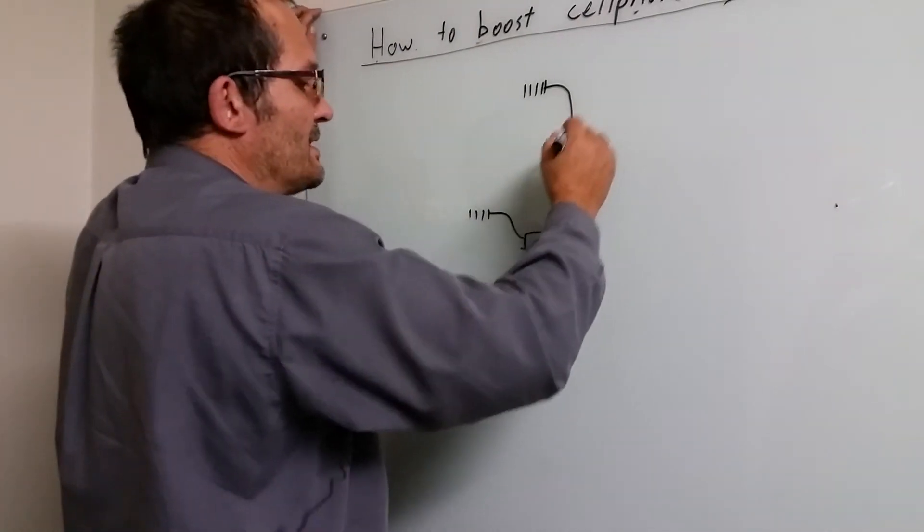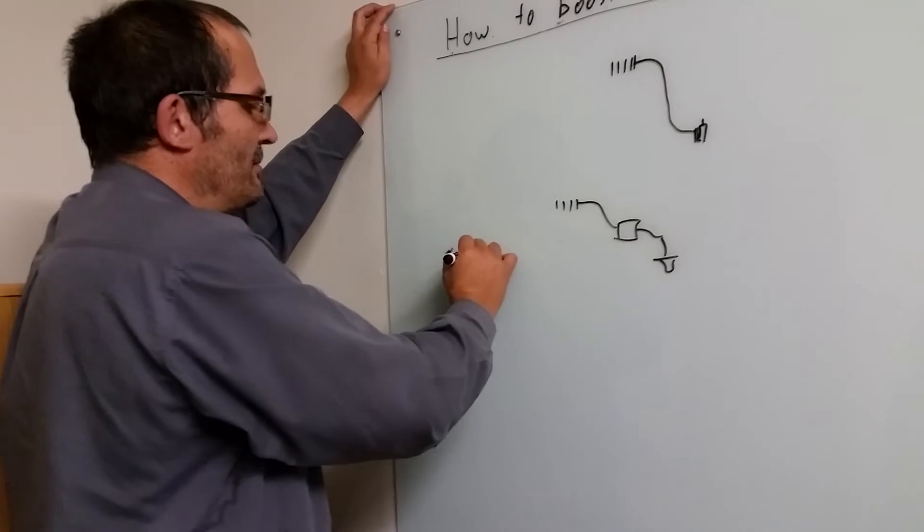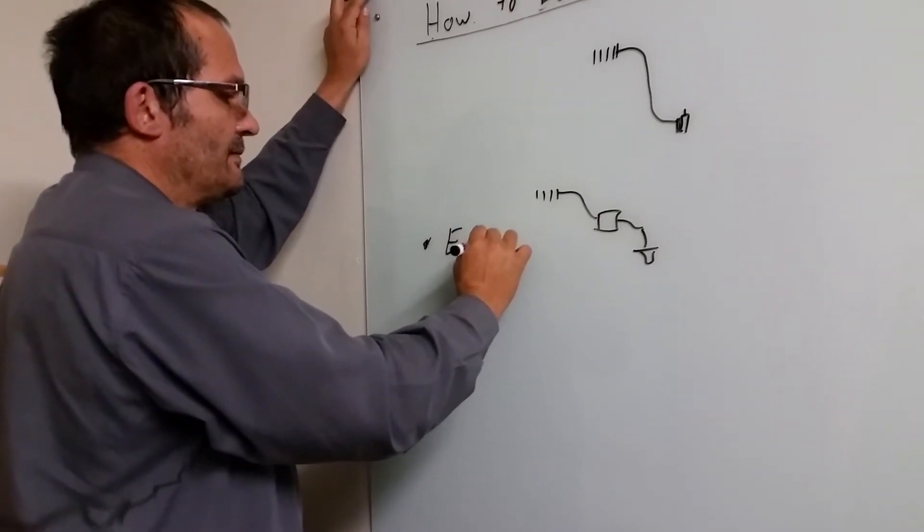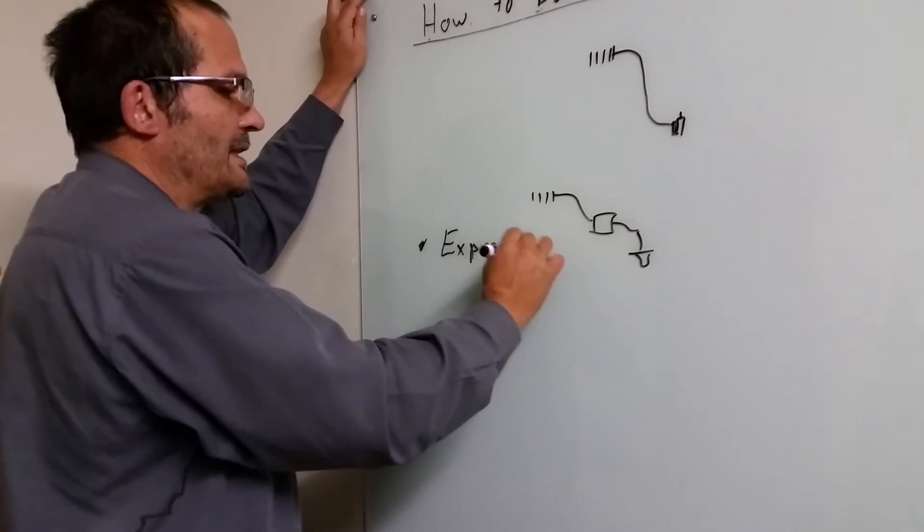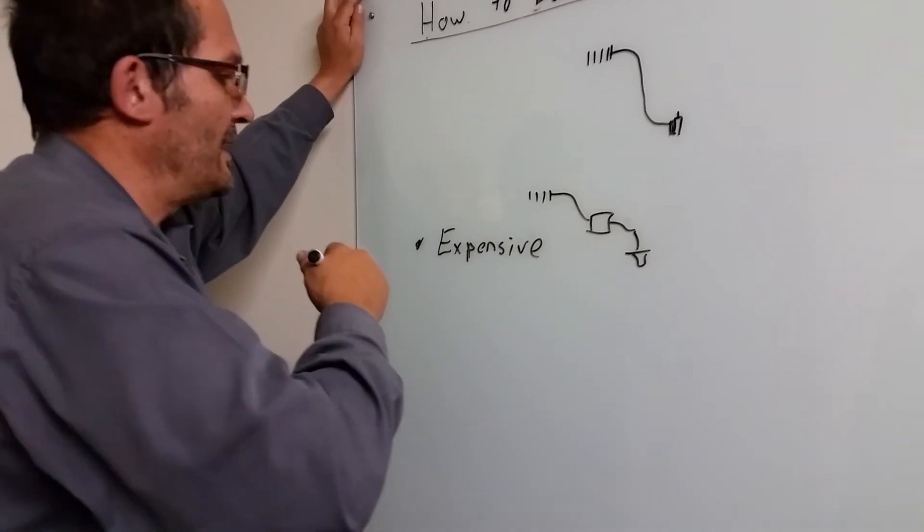Problems with these, if we just look purely at problems with a repeater, first problem it's expensive. In the sense that most probably in South African rand 10,000 to 20,000 rand to get it installed.